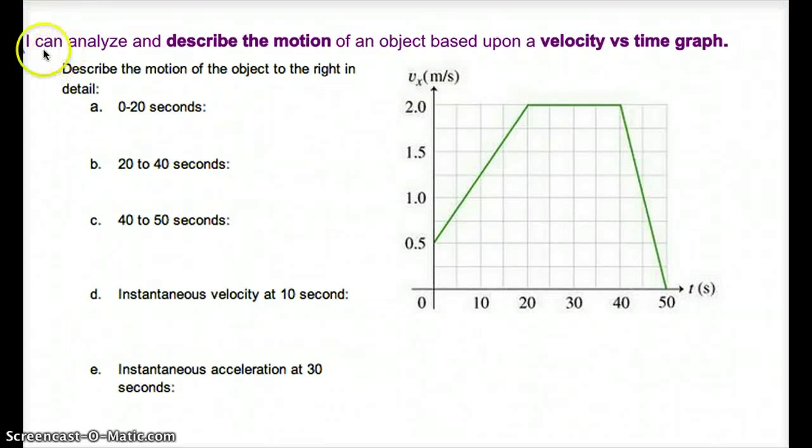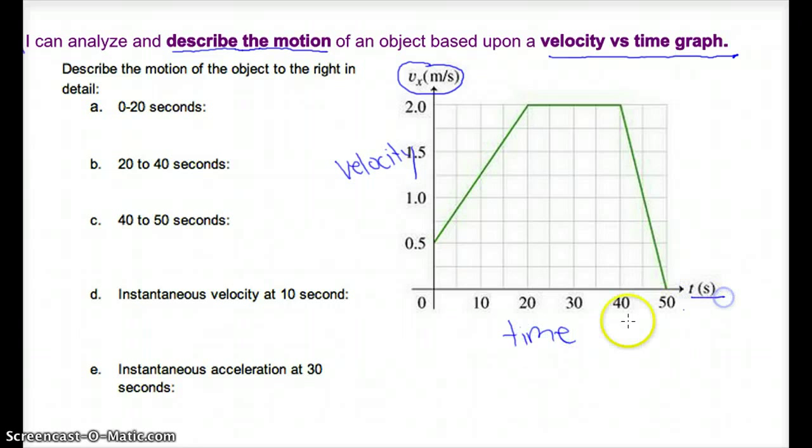This I can statement says I can analyze and describe the motion of an object based upon a velocity versus time graph. Here's an example of something you might see on the test. We have a velocity versus time graph here. This is velocity over here, and this is time over here in seconds. The first section says describe the motion of the object to the right in detail.